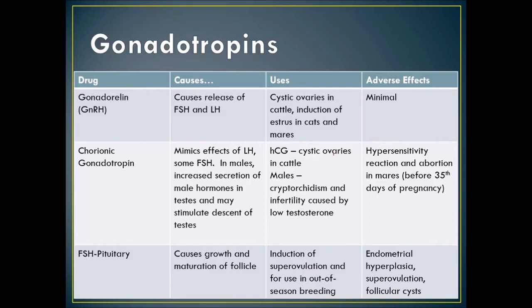Adverse side effects of HCG include hypersensitivity reactions, and it can cause abortion if used in mares before the 35th day of pregnancy. FSH from the pituitary causes growth and maturation of the follicle. We can induce superovulation — useful if we're looking to collect eggs.